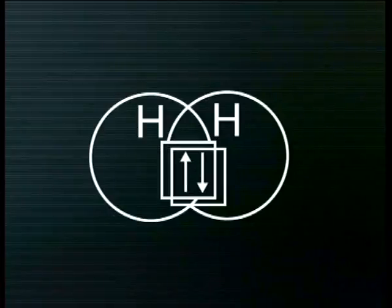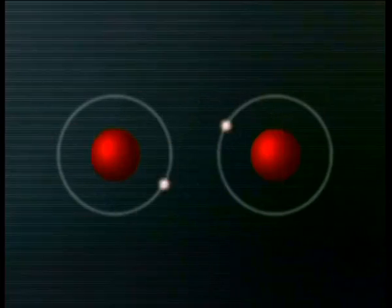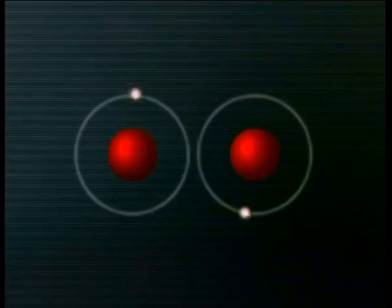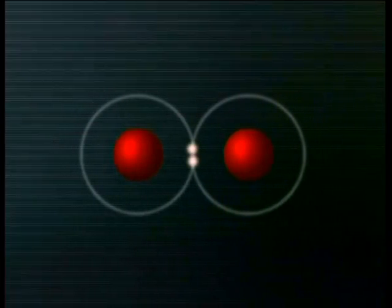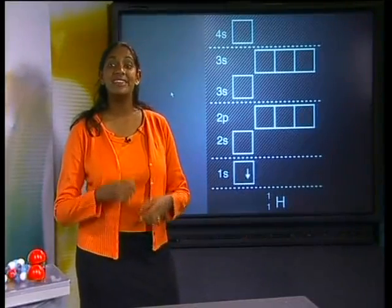To become stable, the hydrogen atom needs to have two electrons in its outer energy level. Therefore, the hydrogen atom will want to pick up a second electron. Remember that electrons are negatively charged, and that they will repel each other when they come close. However, if they collide with enough energy, the orbitals will overlap and the two electrons will be shared. They are able to share an orbital if they spin in opposite directions, as indicated by the opposite directions of the arrows indicating electron spin.